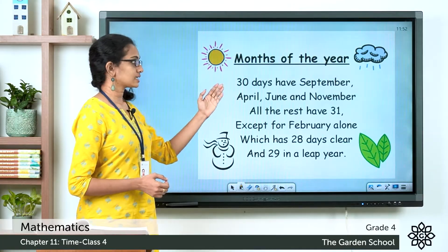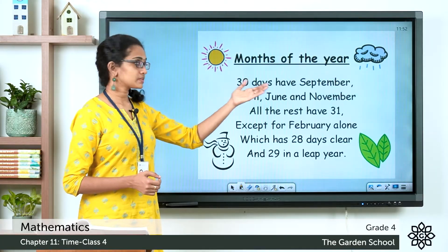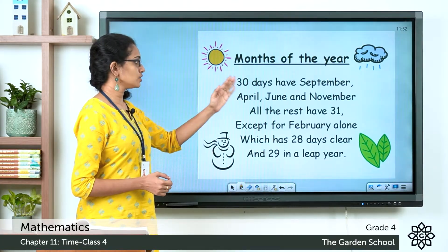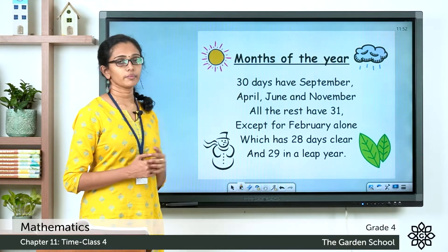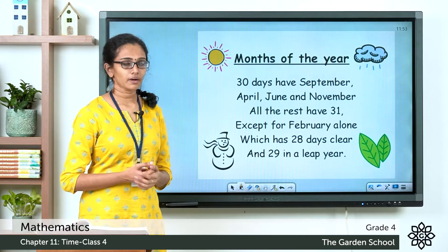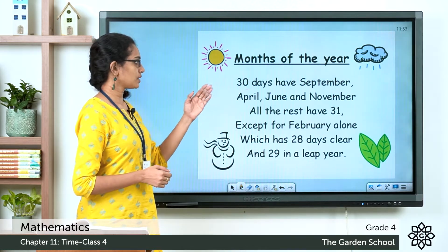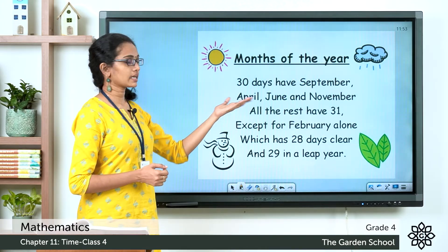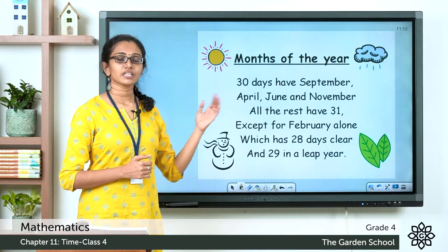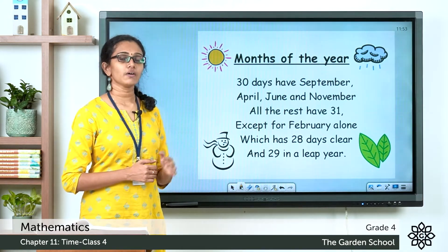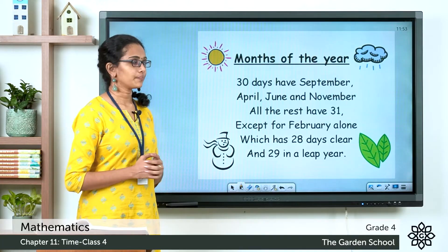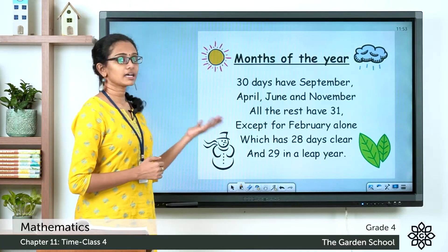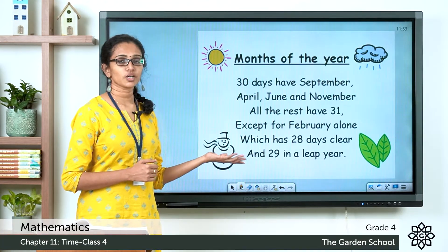So the rhyme says that 30 days have September, April, June and November. These 4 months have only 30 days in a year.